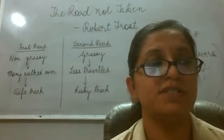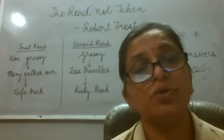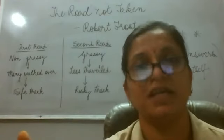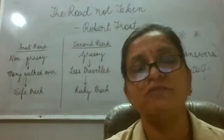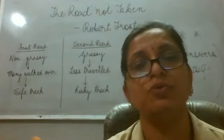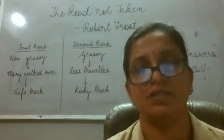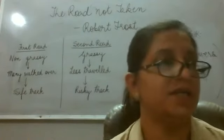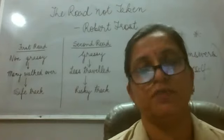Two roads diverged in a yellow wood. When he says two roads, he is talking about the bifurcation — the road which divided into two. He says two roads diverged; diverged means separated, bifurcated.